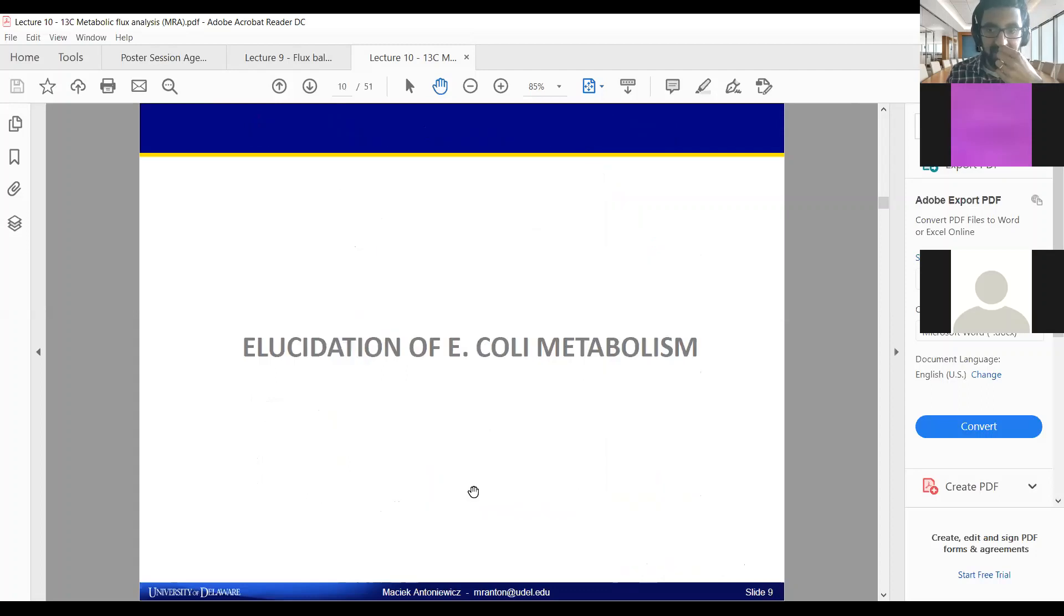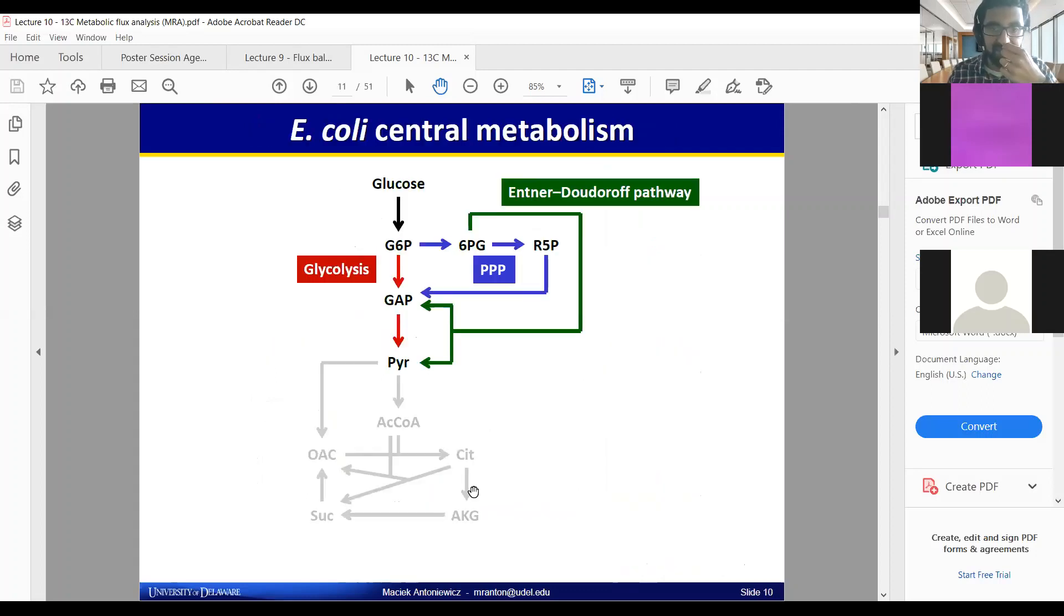I'll go quickly through a couple of other slides. This is it being applied to E. coli metabolism. This is the Entner-Doudoroff pathway, which is related to the pentose phosphate pathway. It comes off of it but it's not the same pathway.